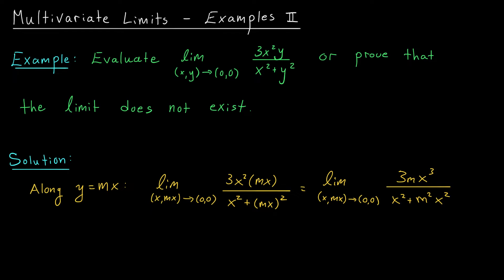So more generally, I decided to consider other lines through the origin, just like we did in our last example. I considered the limit along the line y equals mx. If you test this limit by substituting mx for your y values, you're going to get something like this: the limit as (x,mx) approaches (0,0) of 3mx³ divided by x² plus m²x².